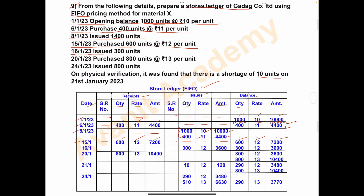Next, on 16th January 2023, issued 300 units. Receipts column nil. In issues, SR number nil, quantity 300, rate per unit 12, amount 300 into 12 = Rs. 3,600. For balance: from 600 units we issued 300, so remaining quantity is 300, rate per unit same at Rs. 12, amount 300 into 12 = Rs. 3,600.